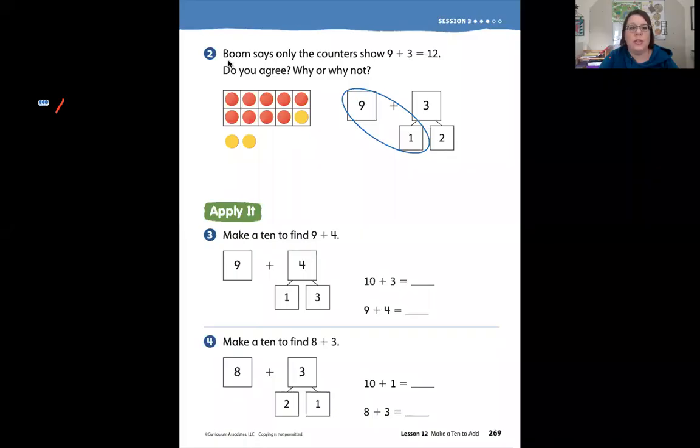Okay, so we're continuing on page 269. It says Boom says that only the counters show nine plus three equals twelve. These right here are my counters, these are not counters, this is an equation up here, and I have a number bond over here.